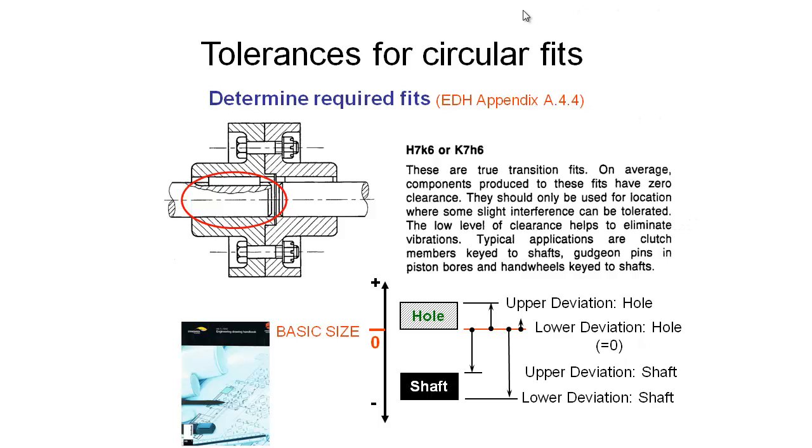In this one we have an H7K6 fit. These are true transition fits, which means that there's always going to be some clearance between the shaft and the hole. On average they have zero clearance and should be used for location where some slight interference can be tolerated.